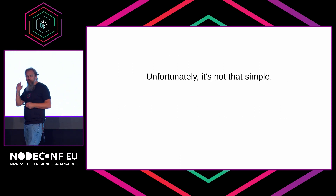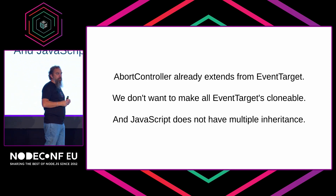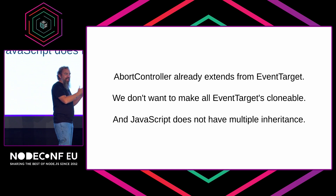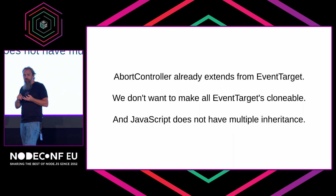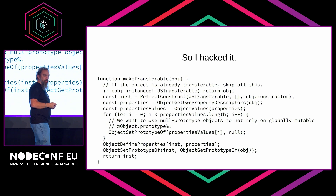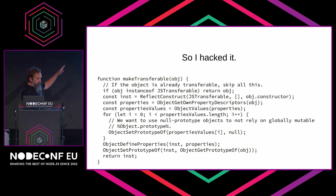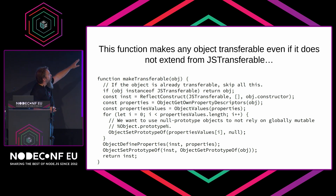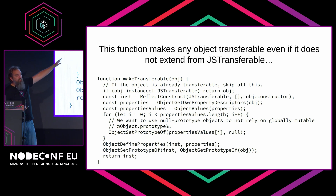But it's not quite that simple. The class also extends from EventTarget, and we don't want to make all EventTargets clonable — we only wanted to make AbortSignal clonable. But JavaScript does not allow multiple inheritance. The typical pattern would be to create a class and have it extend from JSTransferable, but we can't make AbortSignal inherit from both EventTarget and JSTransferable. So how are we going to make this actually work? We hacked it. This complex code takes any object you pass in and makes it transferable even if it does not extend from JSTransferable.